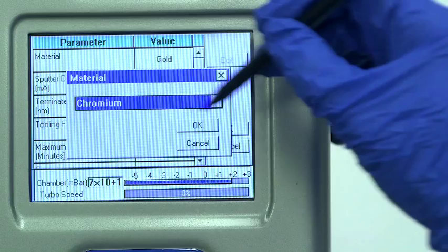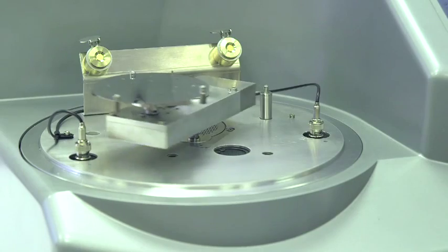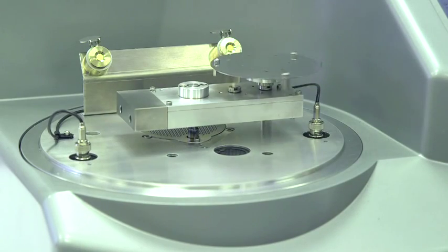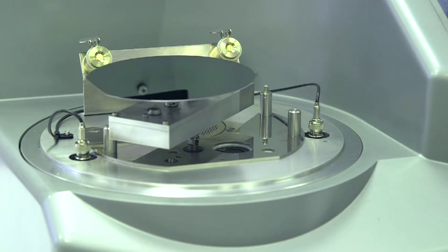The standard system can coat samples of up to 100mm in diameter, but with the use of an optional stage positioning assembly, substrates of up to 150mm can be uniformly coated from a single target.